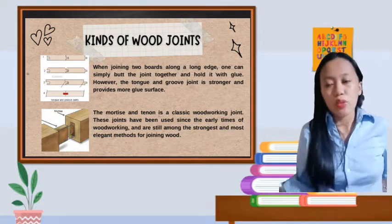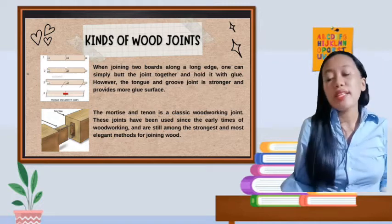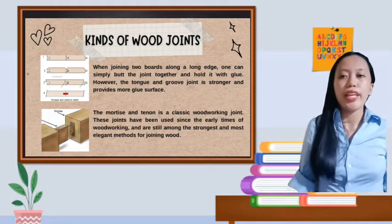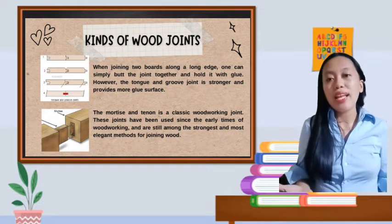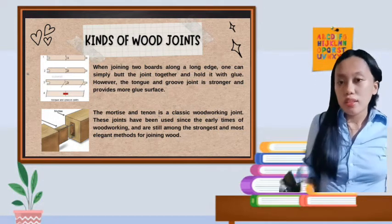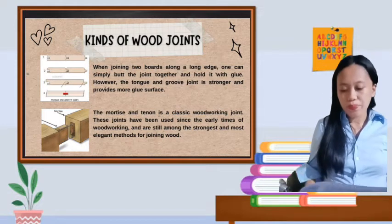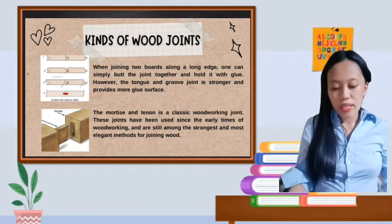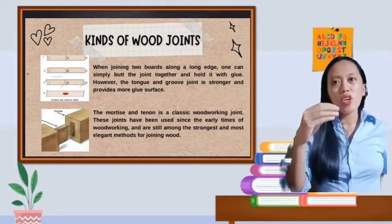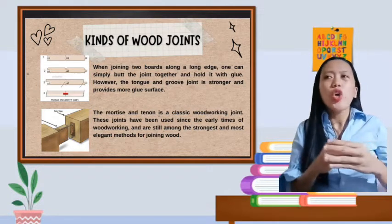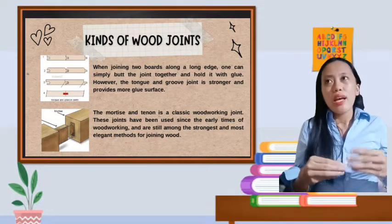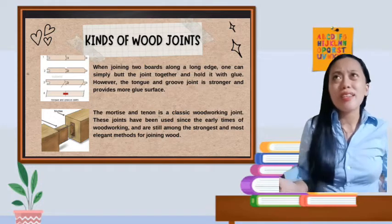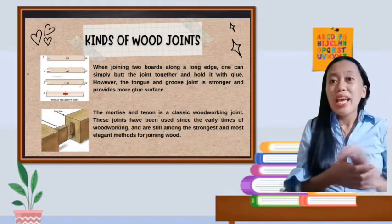Let's proceed to the mortise and tenon. The mortise and tenon is a classic woodworking joint. These joints have been used since the early time of woodworking and are still among the strongest and most elegant methods for joining woods. If you notice, the mortise and tenon has something inside. It has an insert inside. If you notice, this is common when you insert a plug. It's hidden. Unlike box and dovetail where you can see the tails and pins, this one is inside.